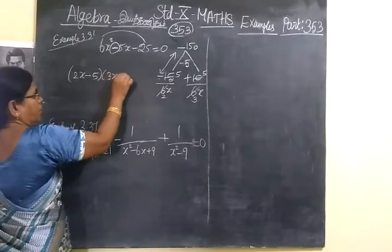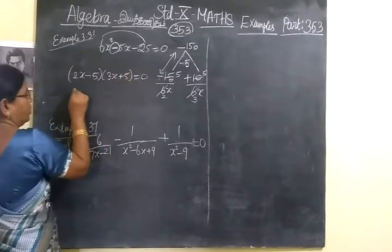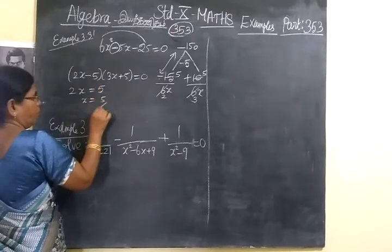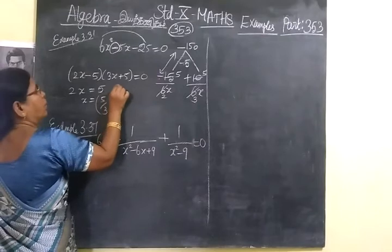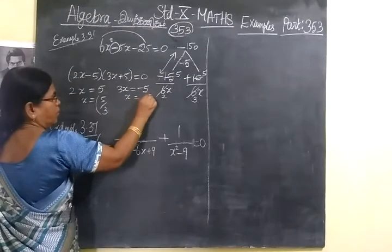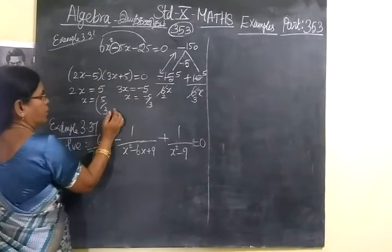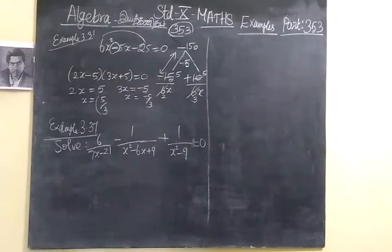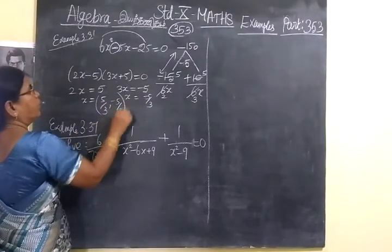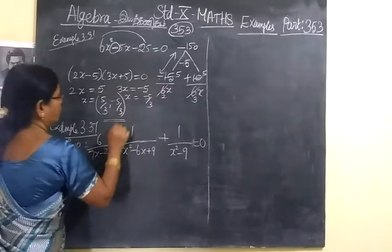Which implies 2x = 5 or x = 5/2. Then here 3x = -5 or x = -5/3. Therefore the solution. Therefore the solution, here we have given the solution: 5/2 and -5/3.